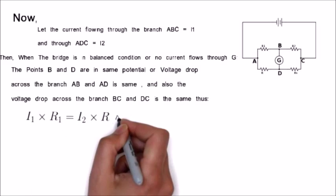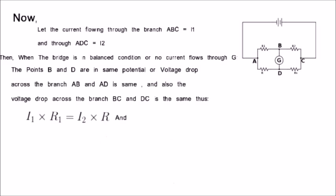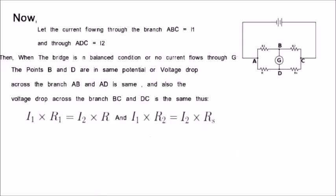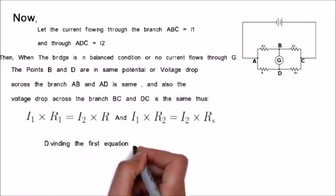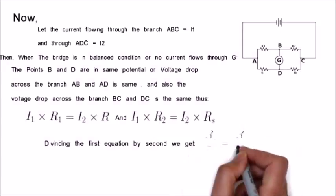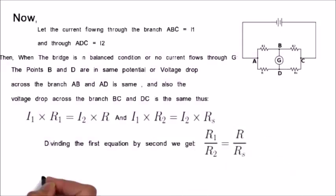I1 times R1 equals I2 times R and I1 times R2 equals I2 times RS. Dividing the first equation by second we get, R1 divided by R2 equals R divided by RS.